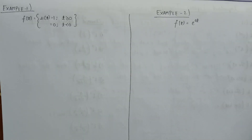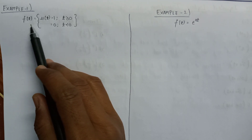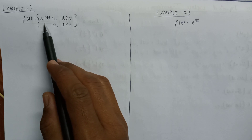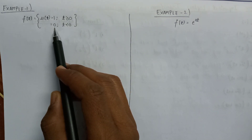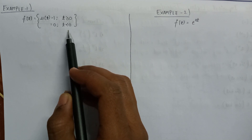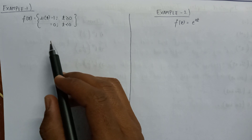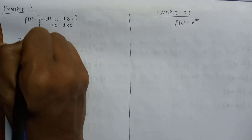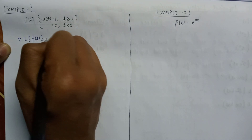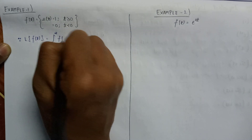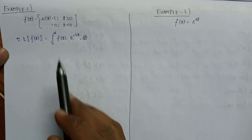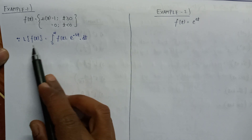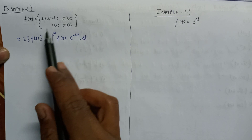Now let us understand the Laplace transform in more detail by solving two examples. In example number 1, the function f is given as a unit step signal u(t), where u(t) equals 1 for t greater than or equal to 0, and u(t) equals 0 for t less than 0. The Laplace transform formula is: L{f(t)} equals the integral from 0 to infinite of f(t) times e to the power minus st, dt.